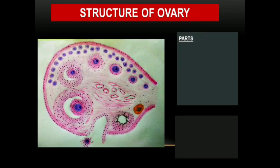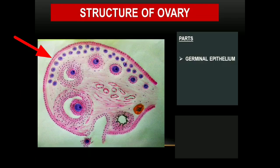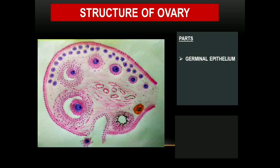The first part of the ovary is the germinal epithelium, found at the surface of the ovary. The surface is covered by a single layer of cuboidal epithelium. In this picture, you can appreciate that the outer surface of the ovary is lined by a single layer of cuboidal cells, which is called the germinal epithelium. This term is actually a misnomer because this layer does not give rise to any oocytes in the future.